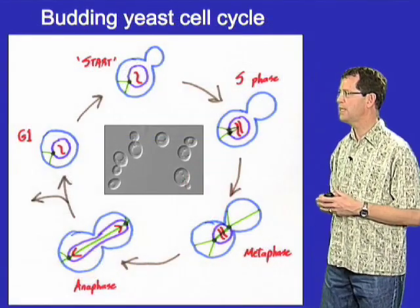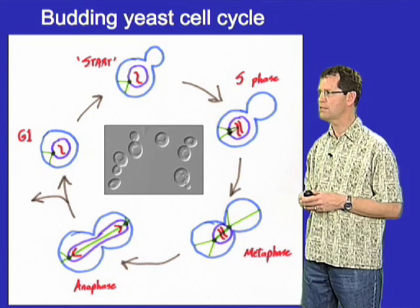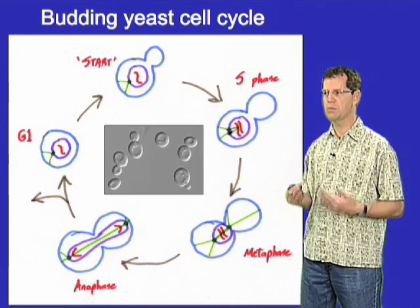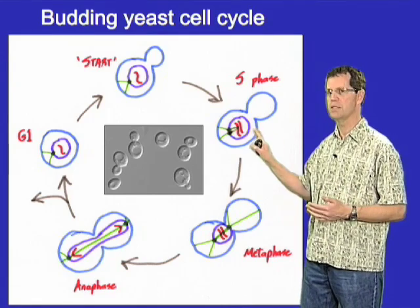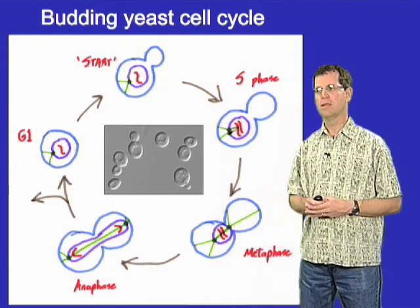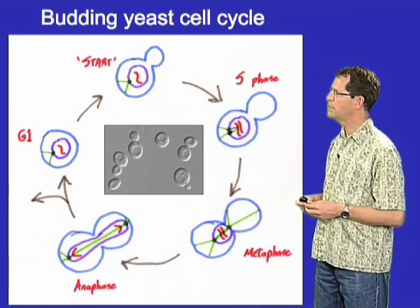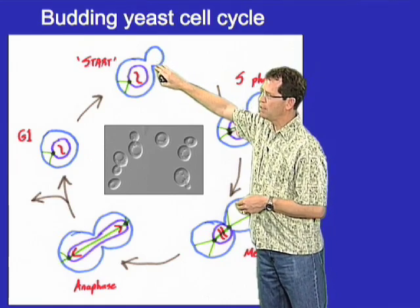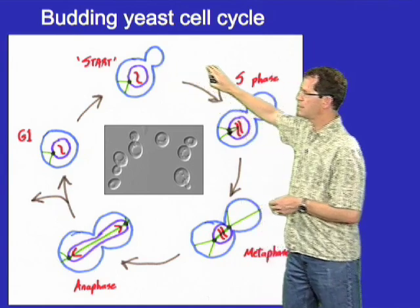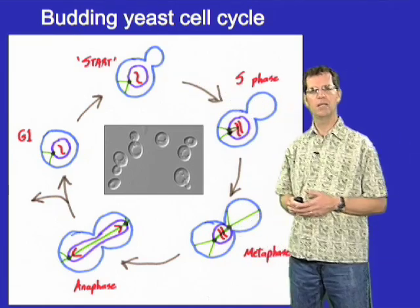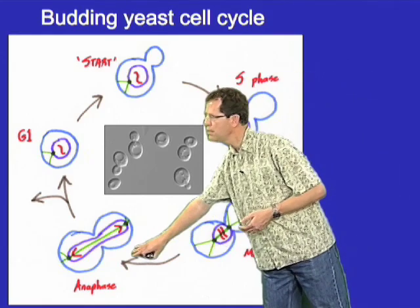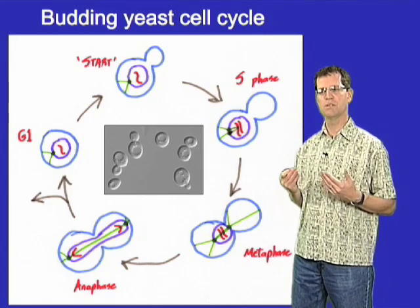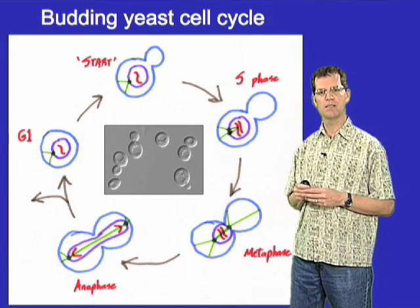This next slide goes into more detail about the budding yeast and its cell cycle because this organism has been so instrumental in cell cycle control studies and is the organism we study in my lab. Budding yeast, as the name implies, divides by budding: at the end of G1, when the cell enters the cell cycle, it starts growing a little bud on the side of the mother cell, and as the cell progresses through the cell cycle, the size of that bud increases until by the end of mitosis the bud is almost the same size as the mother cell.